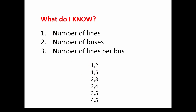Now, what do I know? We have the input data, and we can extract useful information from it. We know the number of lines — each pair of numbers is one line, so we can count up: 1, 2, 3, 4, 5, 6 lines. We can also find out the number of buses: buses 1, 2, 3, 4, 5 — so five buses. And we can use logic to figure out how many lines are connected to each bus. For example, bus 1 appears twice, so two lines; bus 3 appears three times, so three lines.